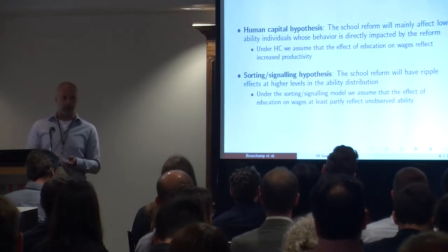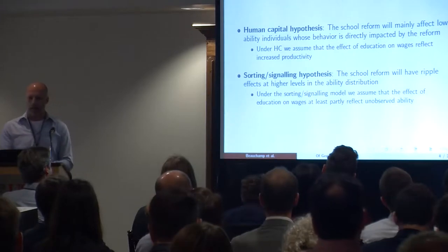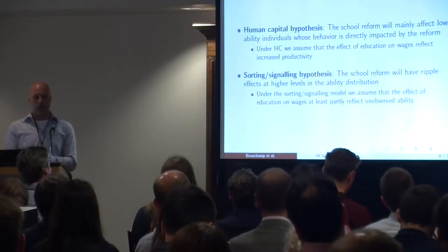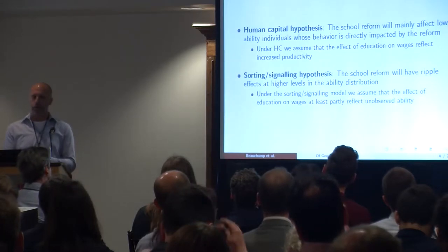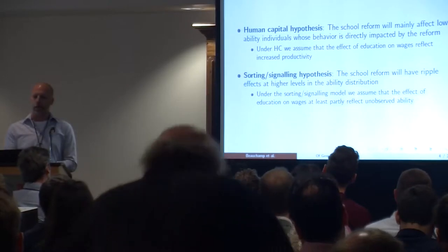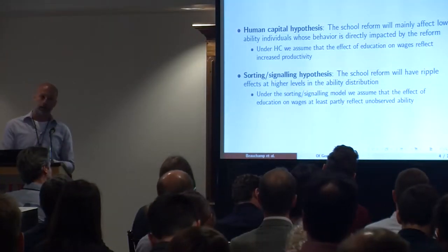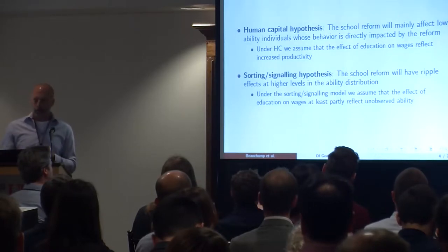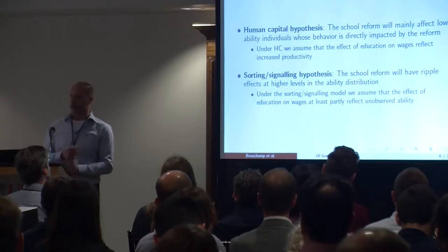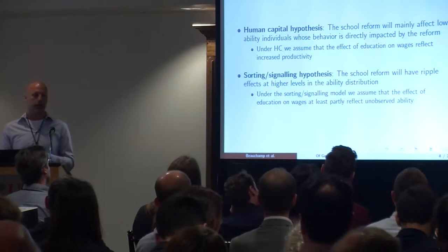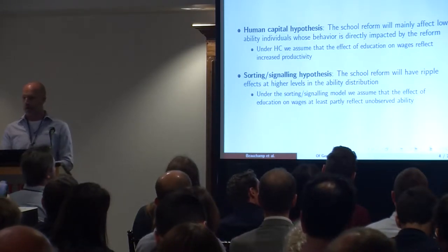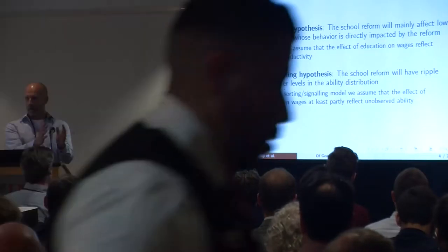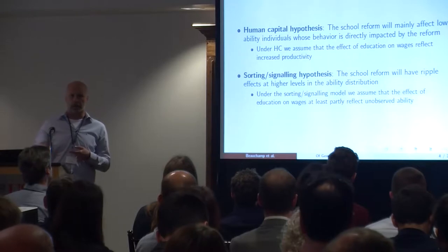The theoretical backdrop involves two broad hypotheses. The first is the human capital hypothesis: we should expect the reform mainly to affect low-ability individuals whose behavior is directly impacted by the reform. The underlying assumption is that the effect of education on wages reflects increased productivity. Under this situation, there is no real reason for a utility-maximizing individual to obtain more education unless forced to do so by the reform. What will happen is that the reform will compress the education distribution, especially at the lower end, by forcing low-ability students to complete more schooling.